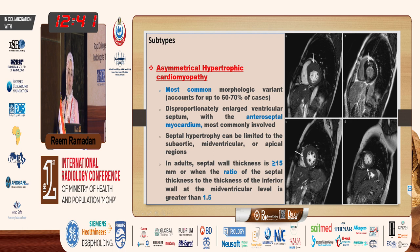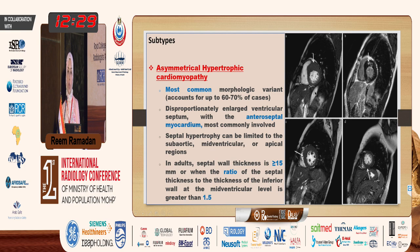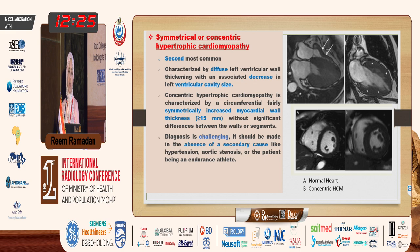Septal hypertrophy can be limited to the sub-aortic level, mid-ventricular level, or apical level. Also, the ratio between the septal thickness to the inferior segment — if it exceeds 1.5 — is considered hypertrophy.